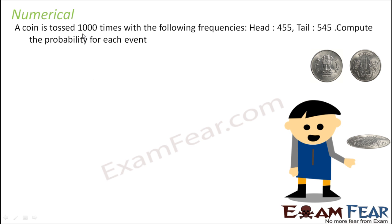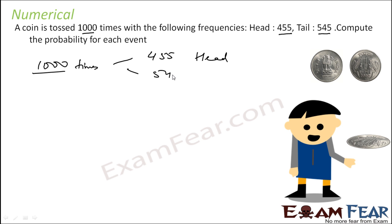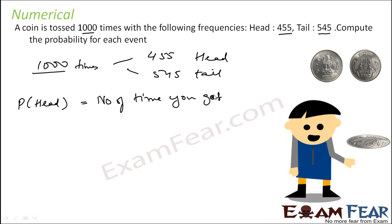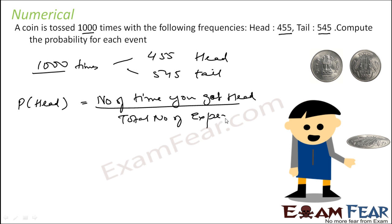A coin is tossed 1000 times and the following frequencies are recorded: heads is 455 and tails is 545. So we have tossed the coin 1000 times and out of that we got 455 heads and 545 tails. We have to find the probability of each — probability of head is nothing but number of times you got head by total number of experiments.